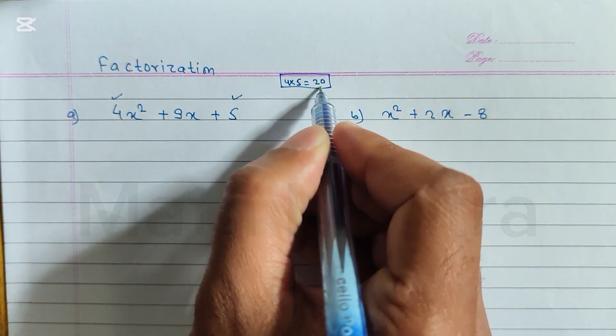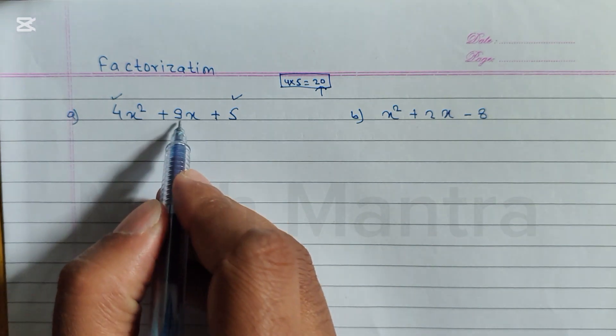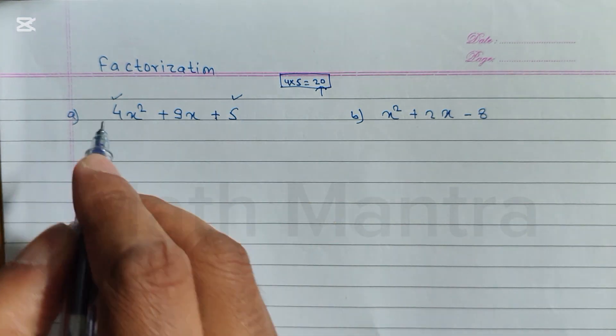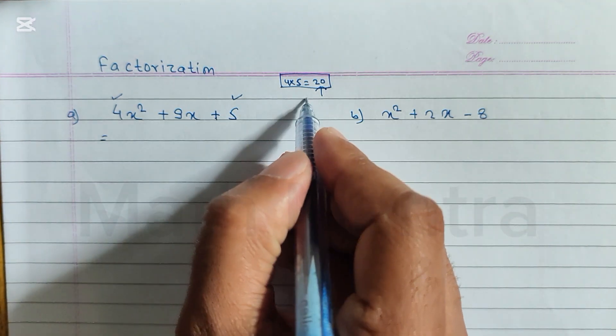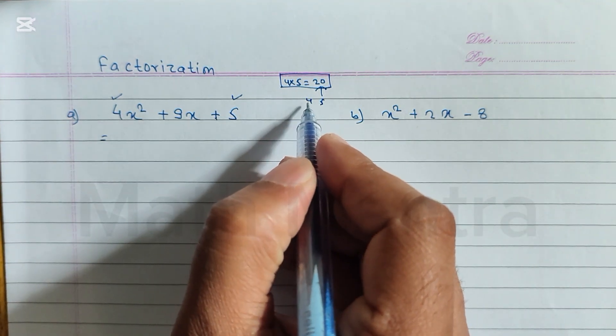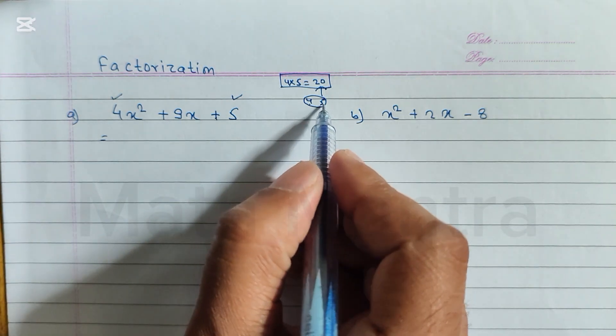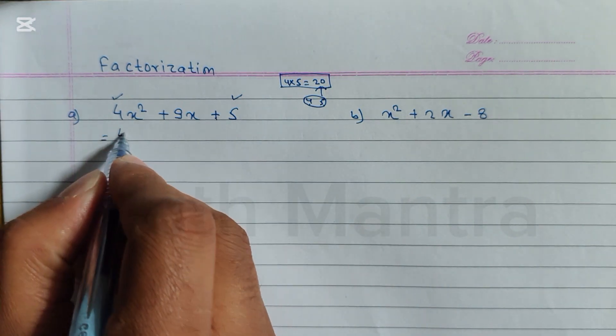Now we have to find out that number whose multiplication is 20 and addition is 9. When you multiply we get 20, and when you add we get 9. So the numbers are 4 and 5. When you add these two numbers we get 9, and when you multiply these two numbers we get 20.